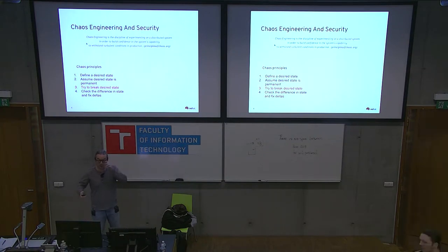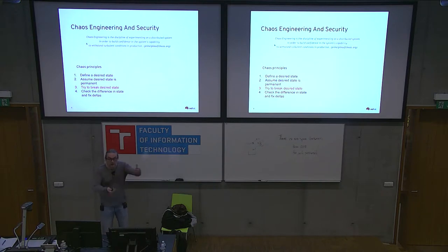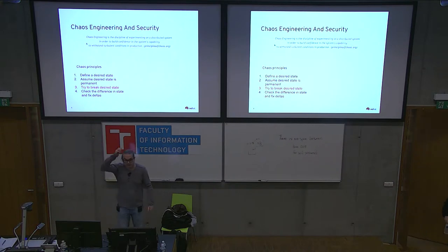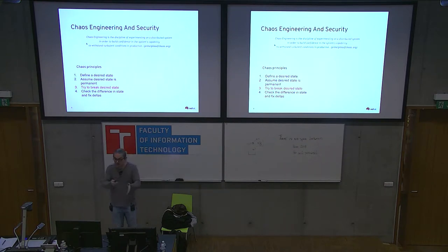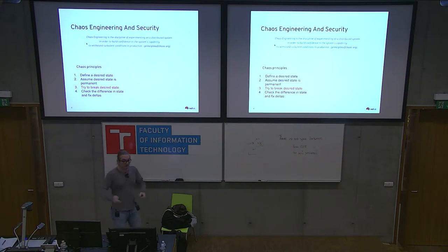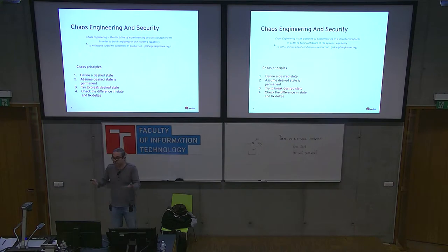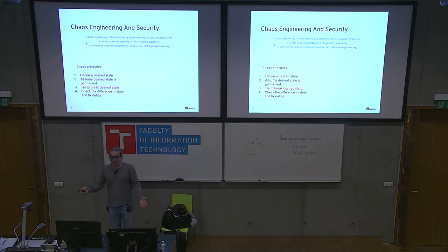Chaos engineering in its purest, traditional form is a way to bring chaos to your system in order to test its resiliency. It usually consists of four steps: first, define the desired state of your system; second, assume that desired state will persist; third, interfere with your system and introduce tasks, exploits to bring things down; and fourth, observe the actual state after and see whether your hypothesis holds.